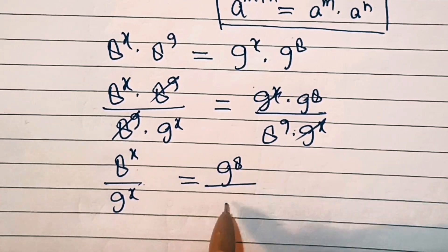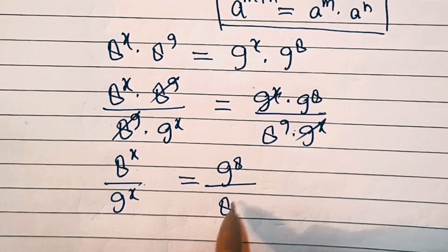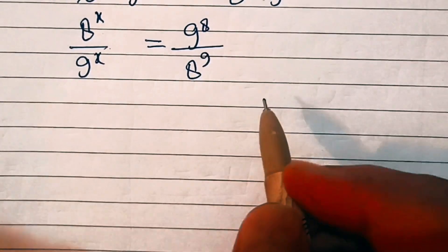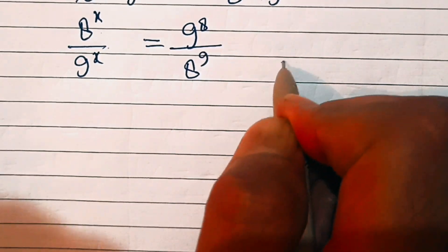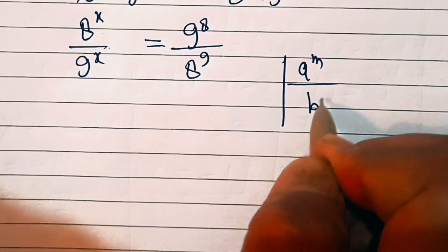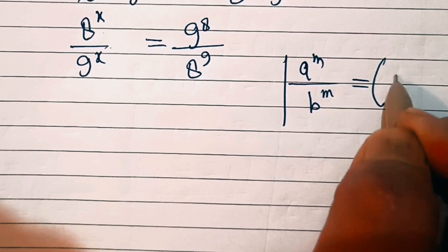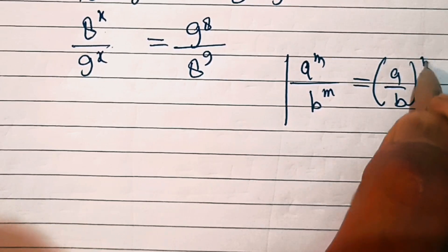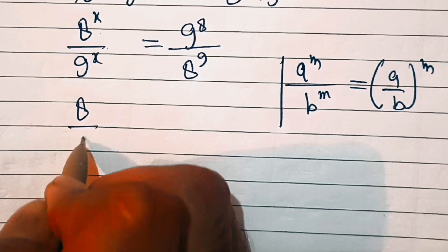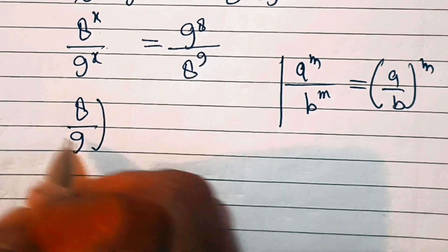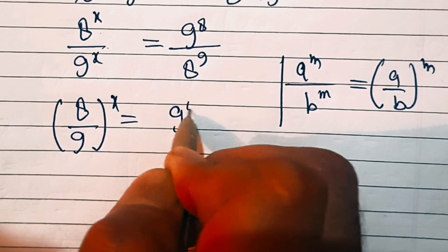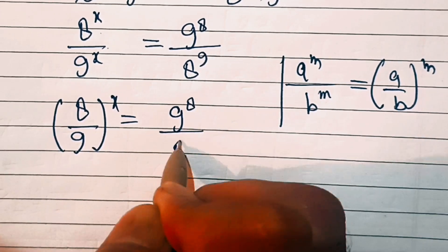Now remember that a power m over b power m equals (a/b) power m. So we can write this as (8/9) whole power x equal to 9 power 8 over 8 power 9.